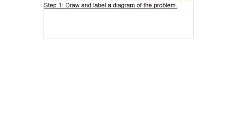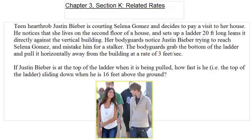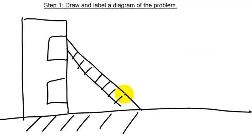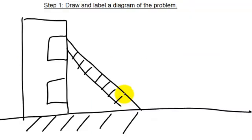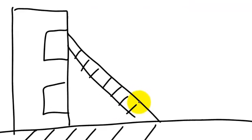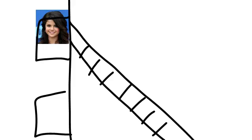Step 1 says to draw and label a diagram of the problem. When I look at the problem, I notice there's a vertical building and a ladder. Since it's Selena Gomez's building, let me see if I can try to draw her in the window. And obviously in the problem there's also Justin Bieber, so let me try to draw him as well on the top of the ladder.